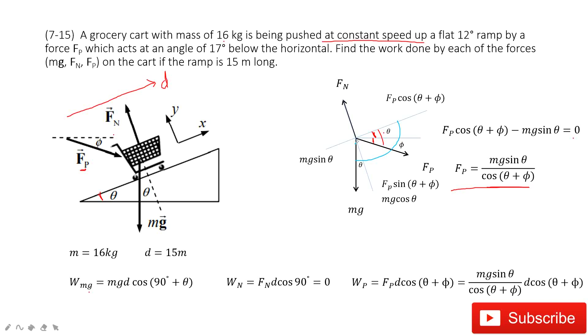Look at this side. This is 90 degrees and this is θ. So it becomes 90 degrees plus θ. The θ is given.